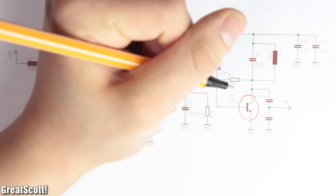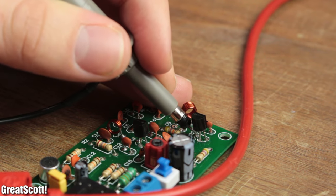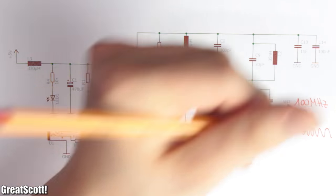At the end of the circuit, we got another amplifier stage to stabilize the signal, which is then send out through an antenna.